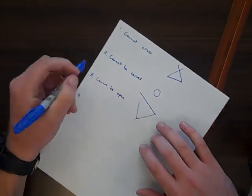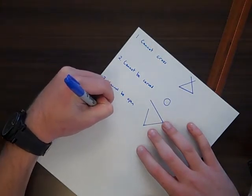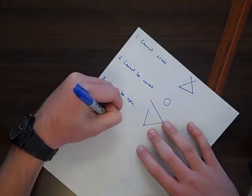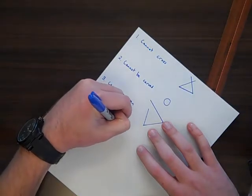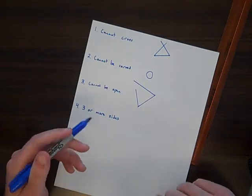And the last rule is that it has to be three or more sides. So triangles, squares, rectangles, those are all polygons.